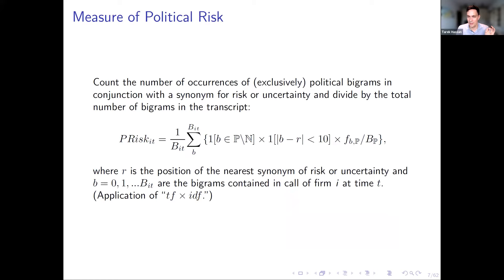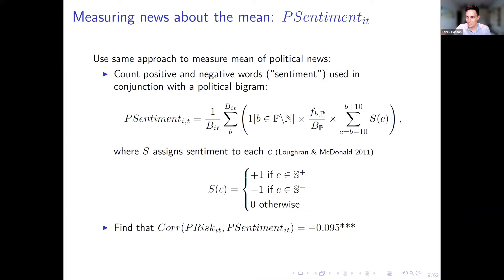That covers the method. There's a small additional complication coming shortly, but the P-risk and P-sentiment measures are essentially the full method — just bigrams near risk synonyms and near tone words.